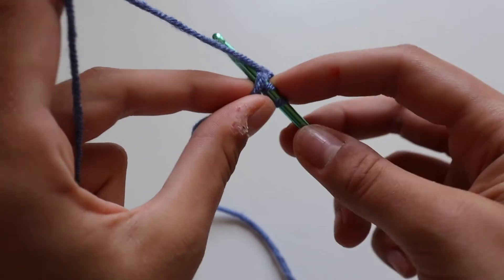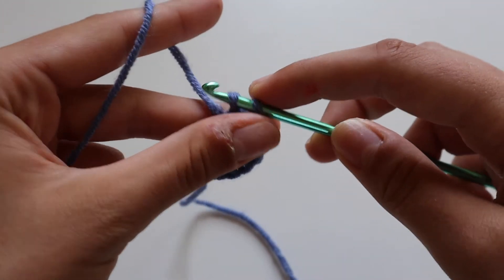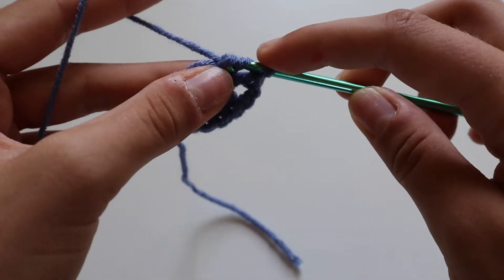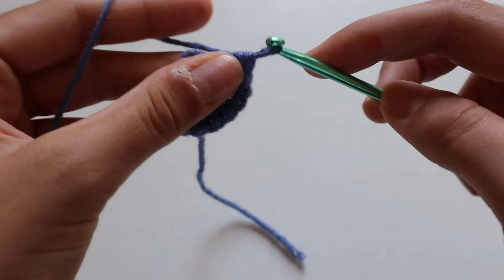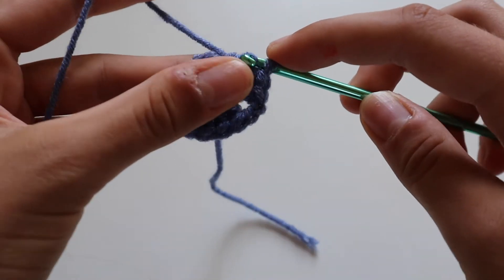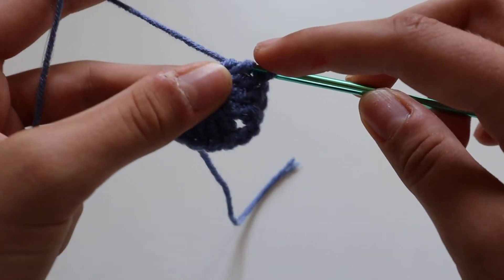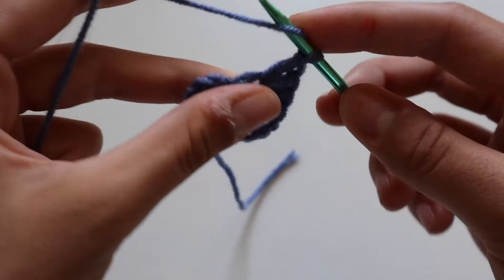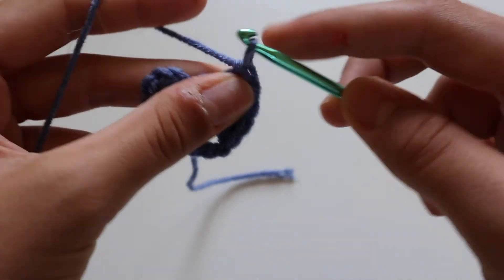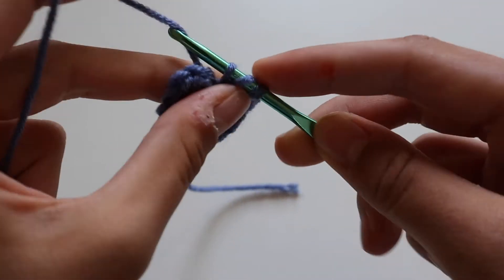Yarn over, insert your hook, yarn over, pull through two, yarn over, pull through two loops, and yarn over, pull through two loops. Working seven treble crochets into that magic circle. So what you've worked is a magic circle, a chain of three, then six treble crochets, then a chain of two, and then seven treble crochets coming up the other side of the heart. And that is our single round for our heart.